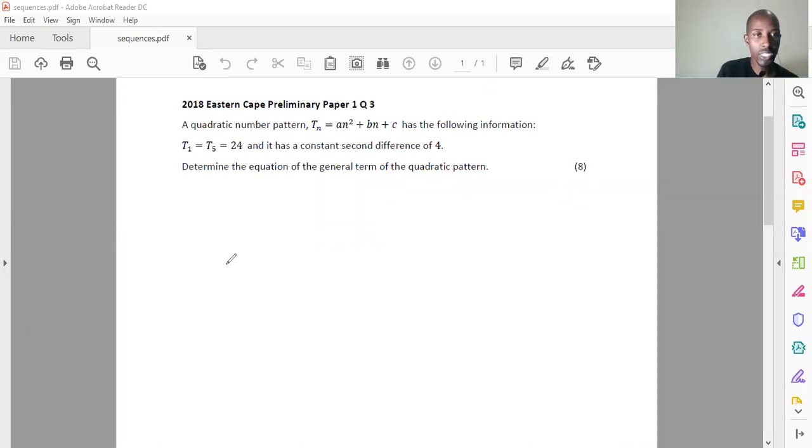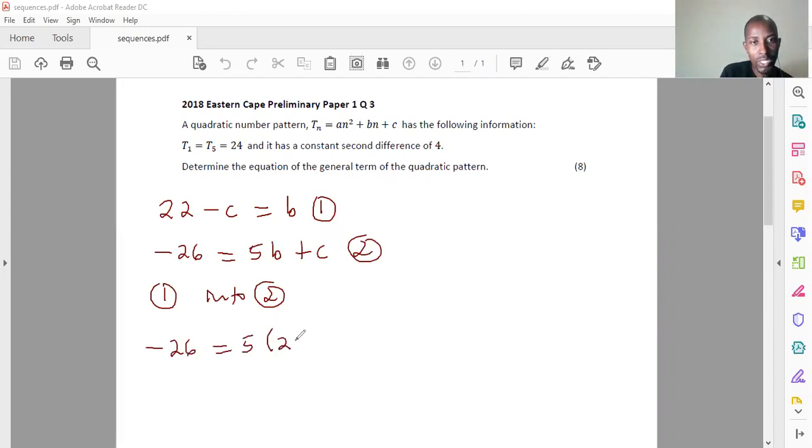Well, I've got my equation, which is this one, which says 22 minus c is equal to b. That was actually equation one. Then I've got that other equation, which says negative 26 is equal to 5b plus c. So that's equation two. Usually we say take one into two. So pretty much I'll say negative 26 is equal to 5. I know what b is. It's 22 minus c, then plus c. Maths will have you at 110 minus 5c plus c, negative 26. Then we have our maths right there.